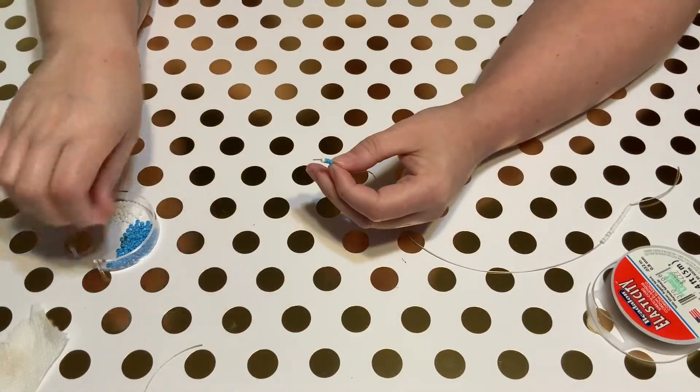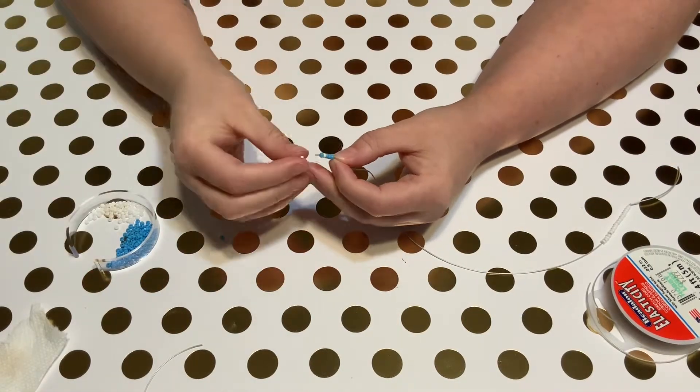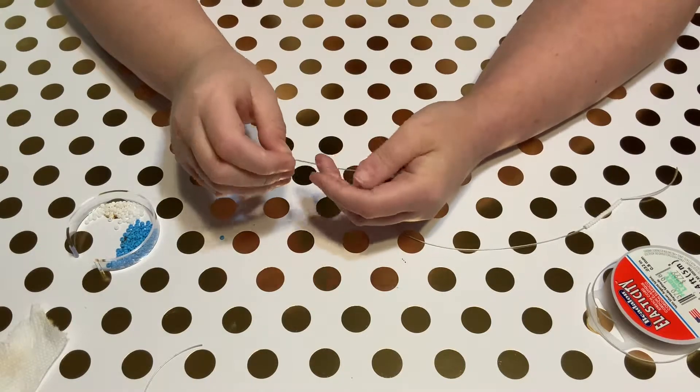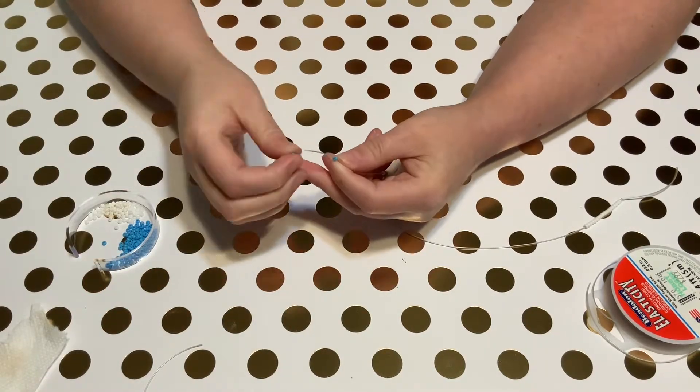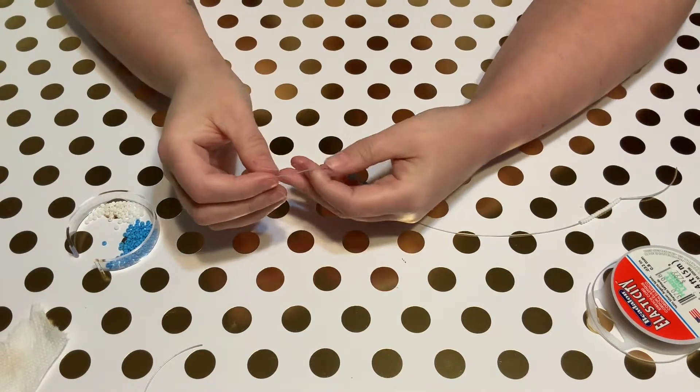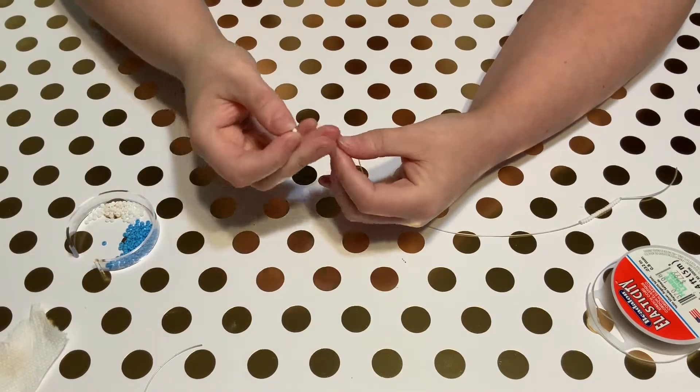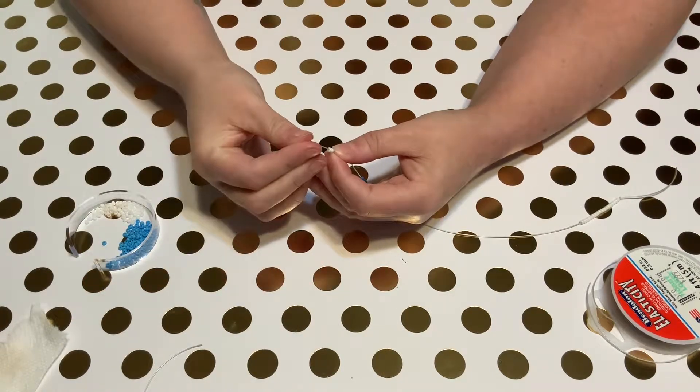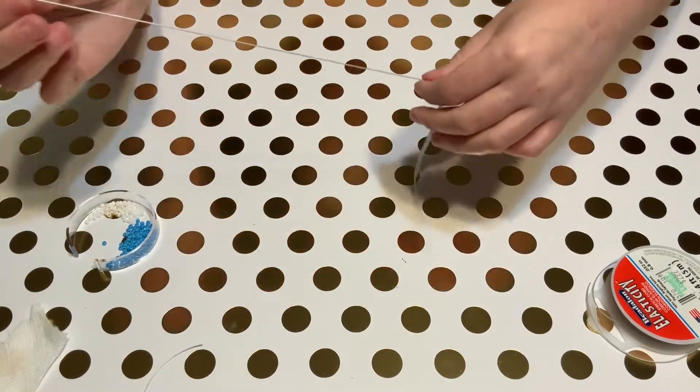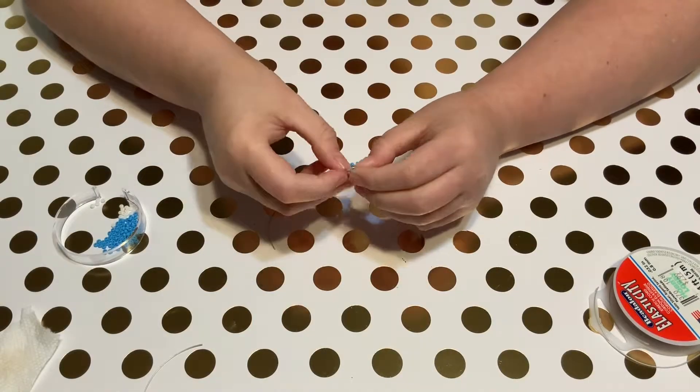While I let the glue dry on my bracelet, I'm going to make a second bracelet spelling out my mom's name, Kathleen, this time using blue. I'm using the same methods with this bracelet that I used with mine, except I'm adding more white beads at the beginning to make sure the bracelet is long enough. I then used the blue beads to spell out my mom's name, knotting both ends of the cord and gluing them in place.